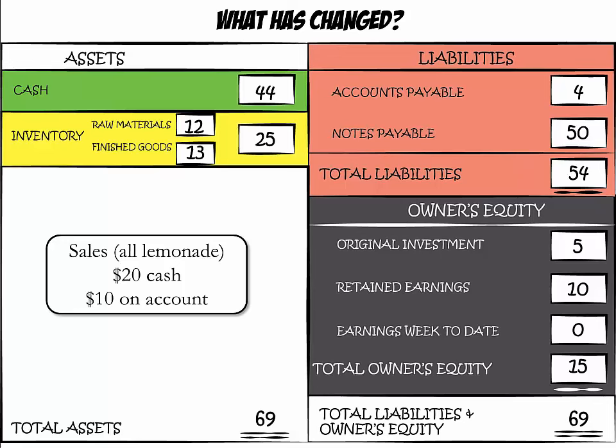You received $20 in cash, so cash went up from $44 to $64. You sold 20 glasses worth $10 on account, so we need to create a new category called Accounts Receivable to reflect sales for which we still have to receive cash. Your finished goods were all sold, so finished goods should go down from $13 to $0, and total inventory should go down from $25 to $12. This increases assets by $20 in cash and $10 in accounts receivable, and decreases assets by $13 less in finished goods. The net increase in total assets is $17.